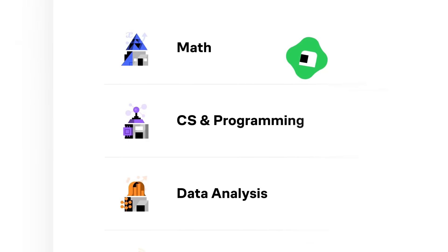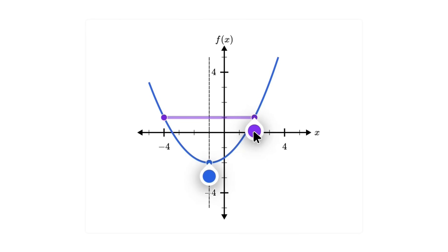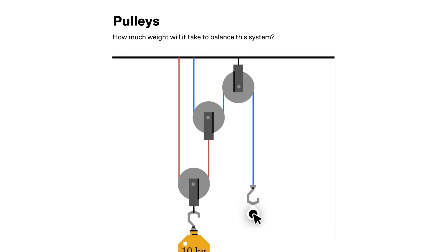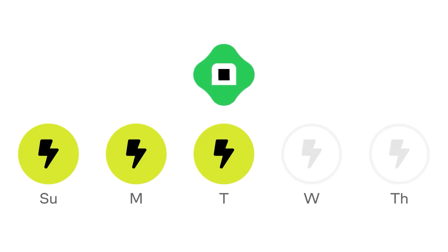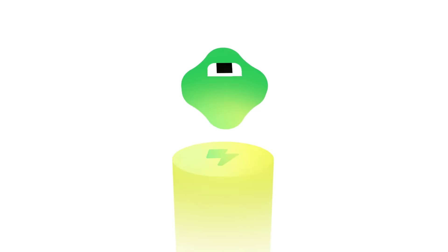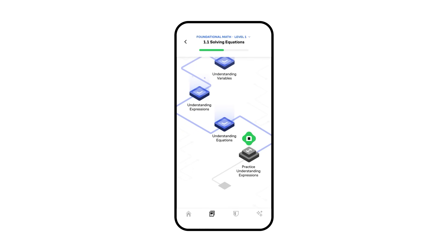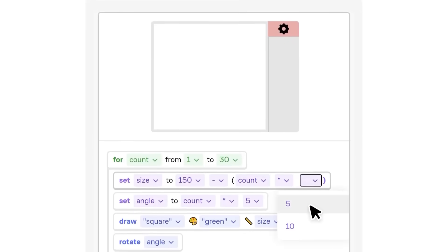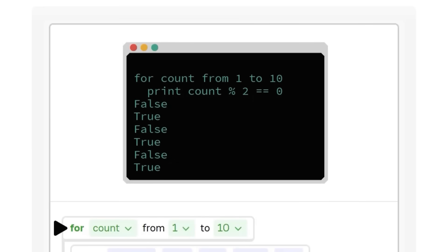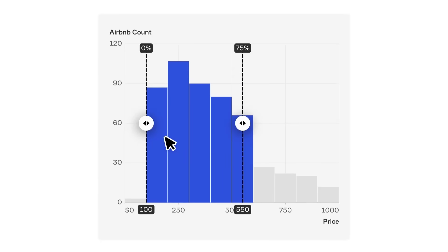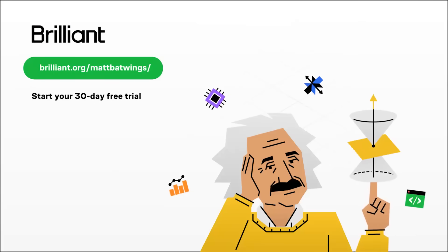Brilliant is the best way to learn about all things computer science and math. All of their online lessons use hands-on problem solving, which sticks to your brain much better than a lecture. By getting hands-on experience instead of memorizing, you'll become a better thinker while also gaining knowledge. It'll help you develop a powerful learning habit — learning a little bit with Brilliant every day is a thousand times better than mindless scrolling. You can even learn right on your phone with fun lessons you can do whenever you have time. We'll touch on programming later in this series, but if you want to get a head start, check out the Creative Coding course. To try everything Brilliant has to offer for free for a full 30 days, visit brilliant.org/MattBatwings or click the link in the description. You'll also get 20% off an annual premium subscription.